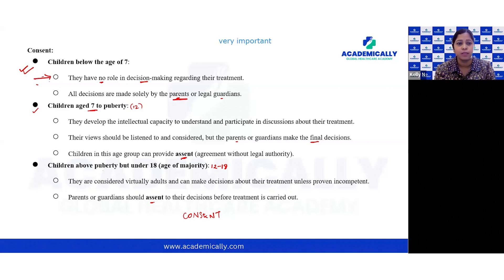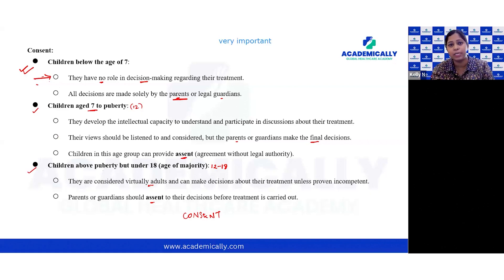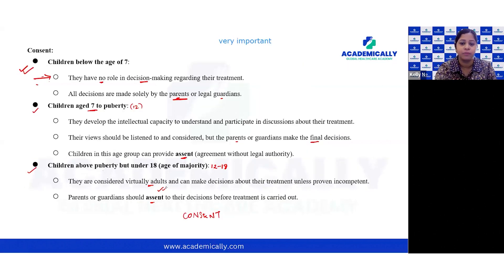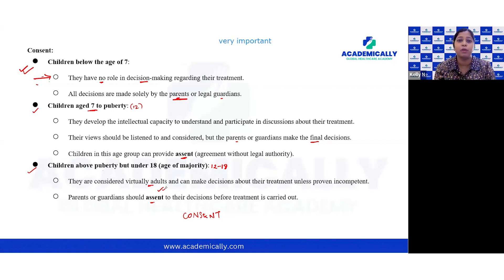Children above the age of puberty, around age 12, but under the age of 18, are considered virtually adults and can make decisions about their treatment unless proven incompetent. However, parents or guardians should also assent to their decision before treatment is carried out. So any patient between the age of 12 to 18 can give consent for treatment, but the parents must also agree to the same treatment plan.